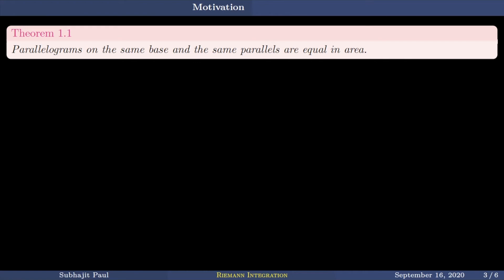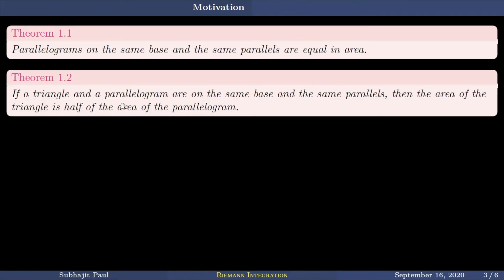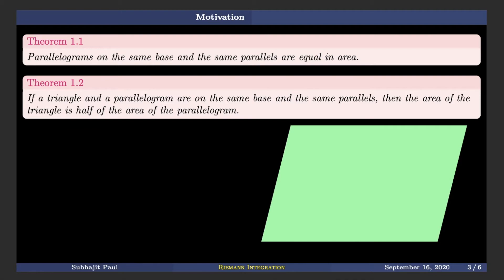So theorem, first theorem is parallelograms on the same base and same parallels are equal in area. The second theorem says, if a triangle and a parallelogram are on the same base and the same parallels, then the area of the triangle is half of the area of the parallelogram. These two theorems together gives us this result.